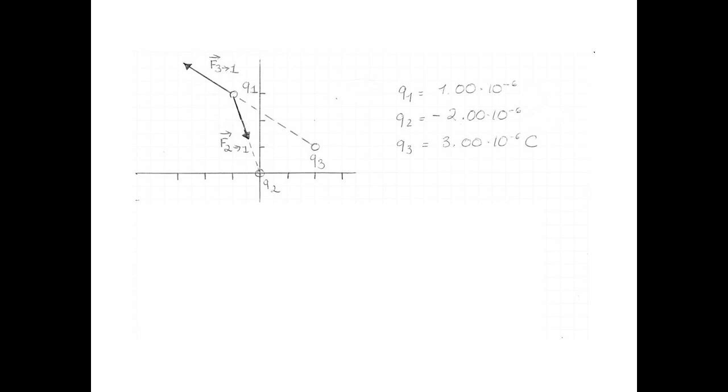So 1 and 3 are positive, they repel each other, and 1 and 2, well, 1's positive, 2's negative, so there's an attraction.